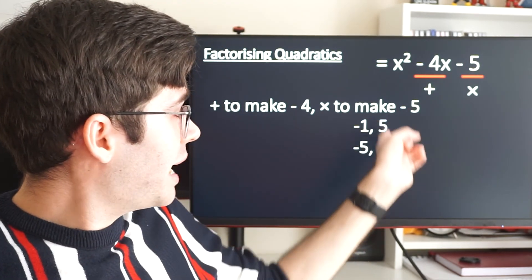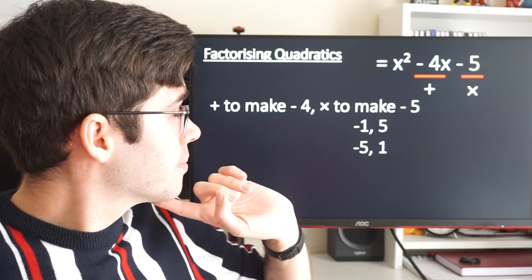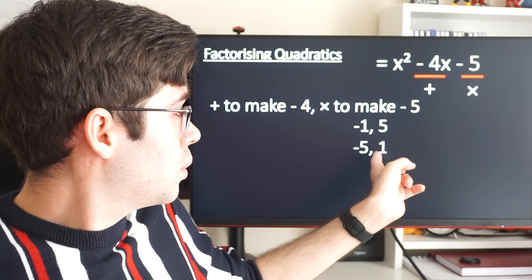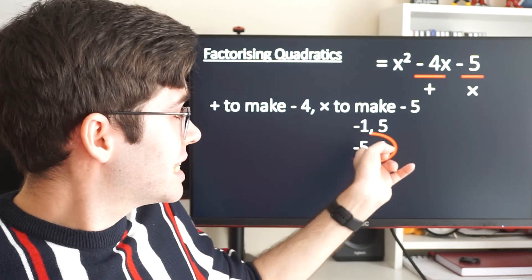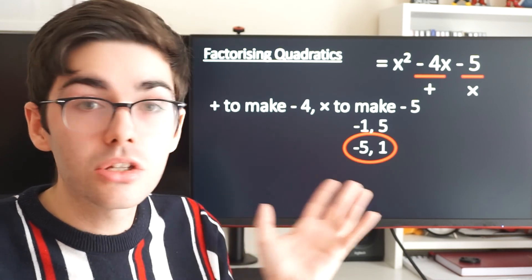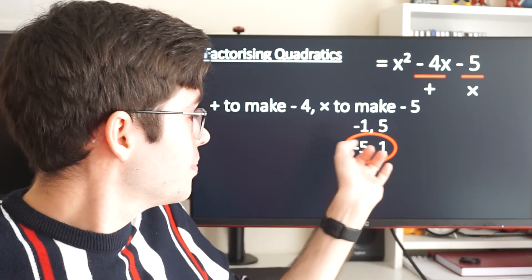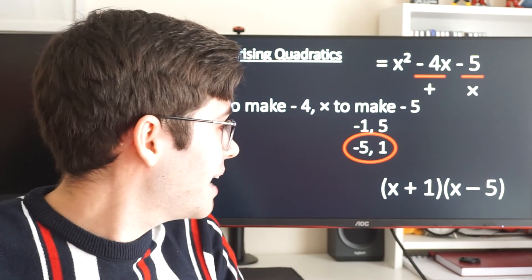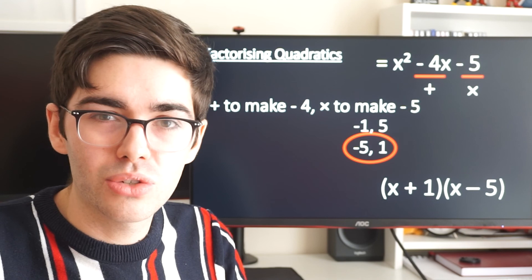Which of these, when you add them together to each other, is going to give me minus 4? Will that give me minus 4? Or will that give me minus 4? It's this one. Minus 5 plus 1 gives me minus 4. So that's what goes in my brackets. x plus 1, x minus 5. And that is all you have to do to factorize this quadratic.